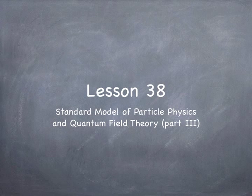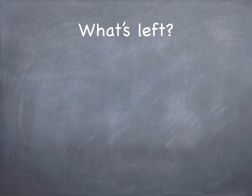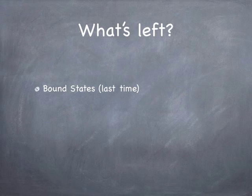Welcome back. It's Lesson 38, Part 3 of our three-part series on the Standard Model of Particle Physics and Quantum Field Theory. Let's talk about what's left to do. Last time we discussed bound states, including positronium and charmonium, and a little bit about isotopic spin and pions and so on.